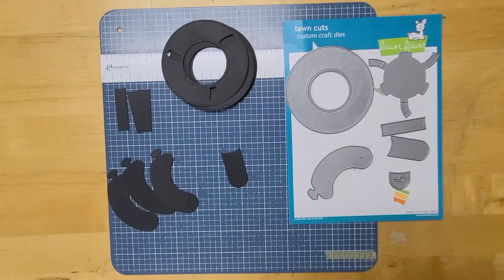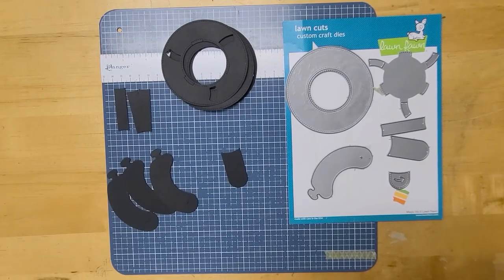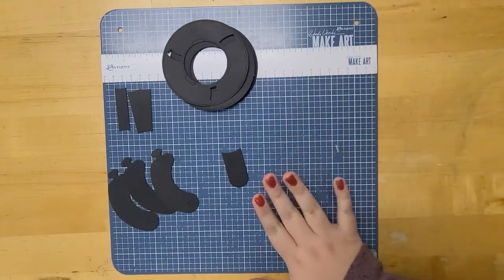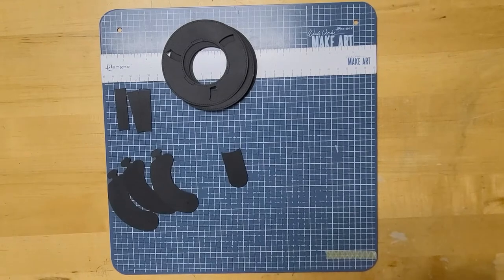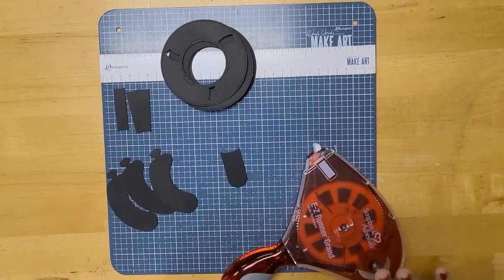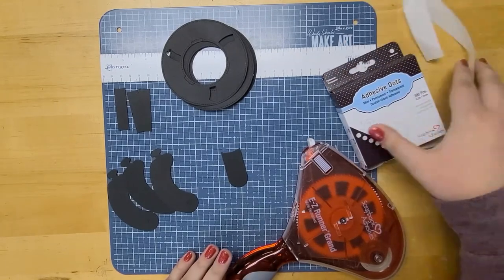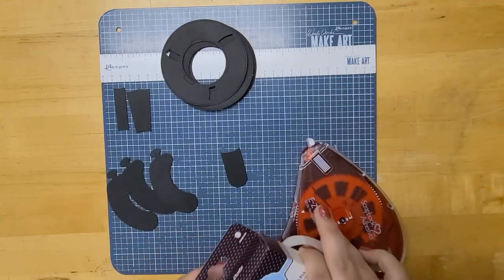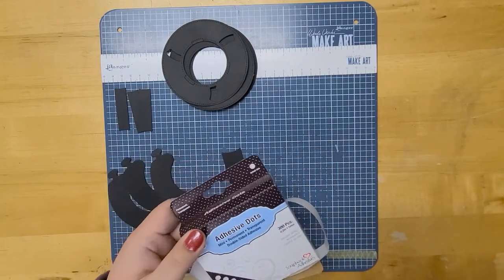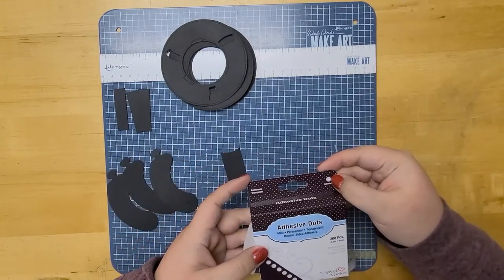So now we'll start assembling our magic iris. You're going to need the pieces we just cut as well as some tape runner and some adhesive dots. The size of the adhesive dots is important. You're going to want a small dot or a mini.